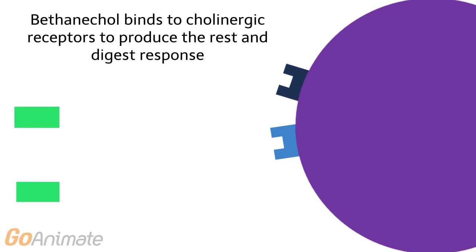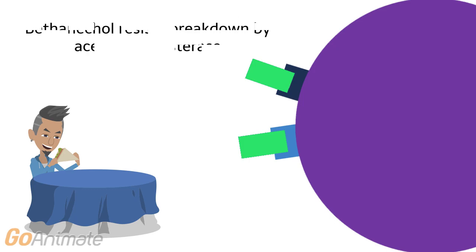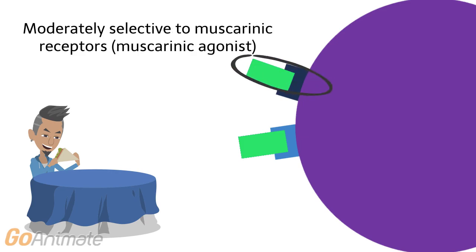An example of a direct-acting parasympathetic agonist is bethanacol, which binds directly to cholinergic receptors and promotes the rest and digest response. Bethanacol resists breakdown by acetylcholinesterase and is moderately selective to muscarinic receptors, so it can be called a muscarinic agonist.